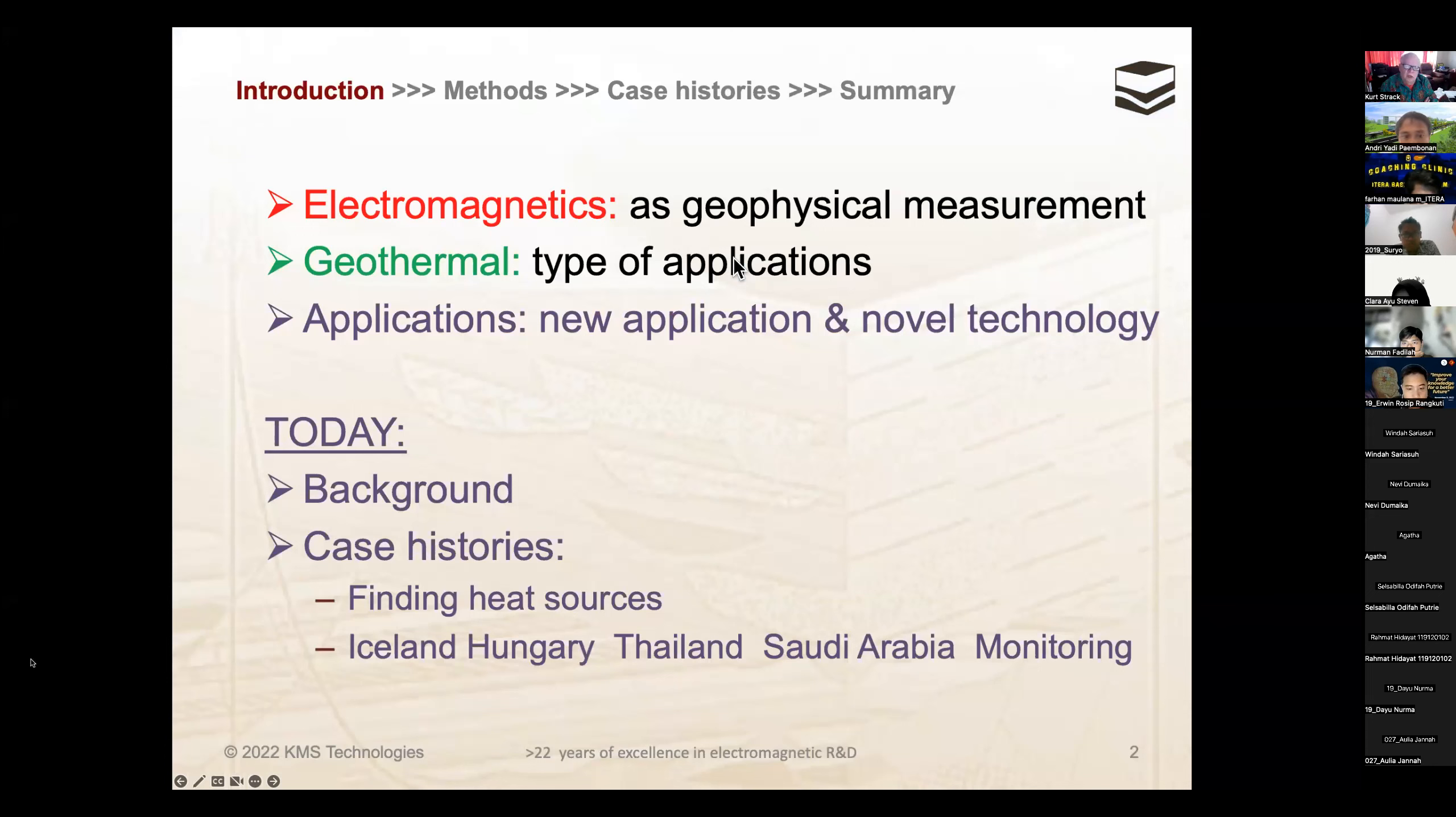Electromagnetics is a geophysical measurement, and geothermal is the type of application for getting heat for energy uses out of the subsurface. I will give you examples of new and novel applications from Hungary, Thailand, Saudi Arabia, and some monitoring applications, and of course Iceland. There are some other examples in this presentation from other countries like the United States, but they're not really identified as case histories.